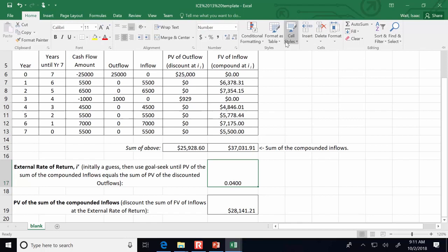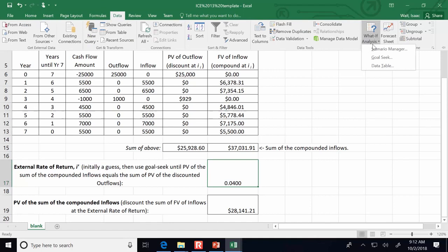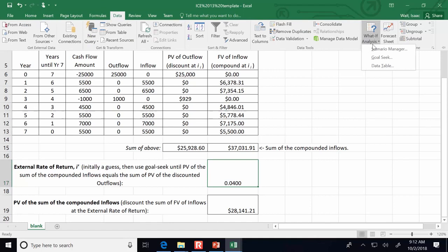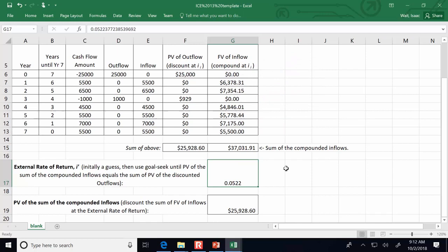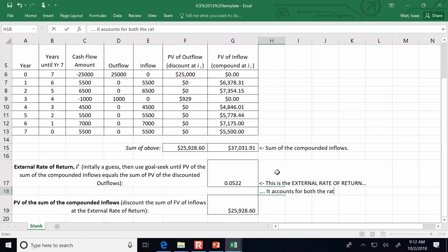So we want to keep playing around. 0.02. We're getting closer. 0.03. Even better. 0.04. This is getting boring. So now this is when I say home, data, what-if analysis, goal seek. And my goal is I will set this equal to 25928.60 by changing the external rate of return. And it plays around for a little while and then 5.22. So this is the final answer. So this is the external rate of return.